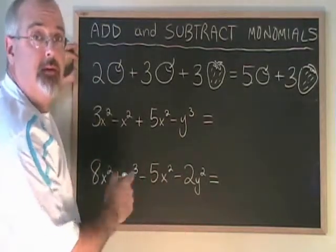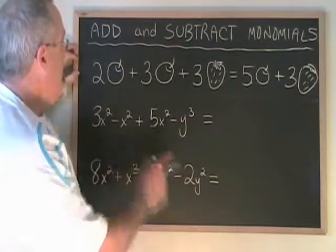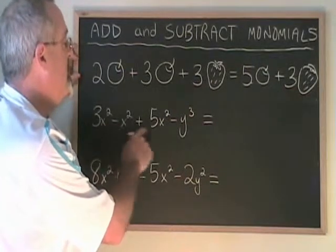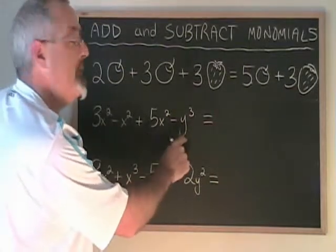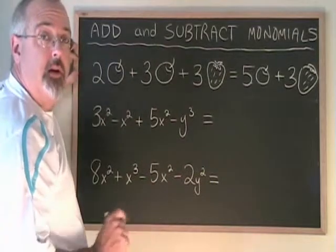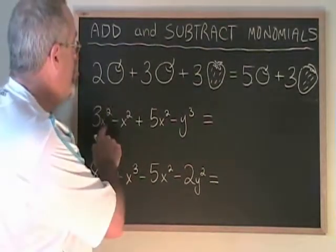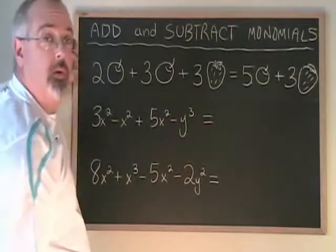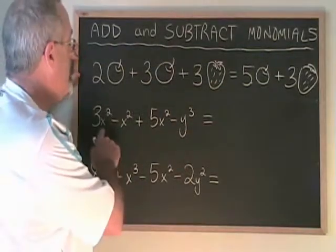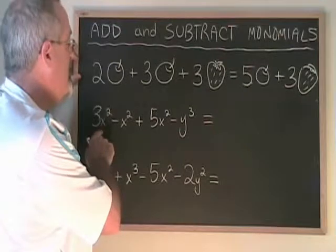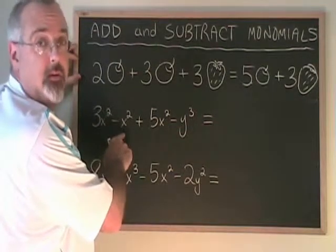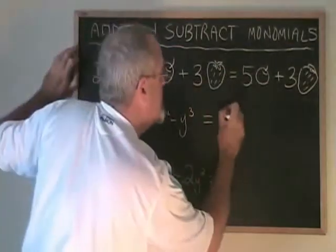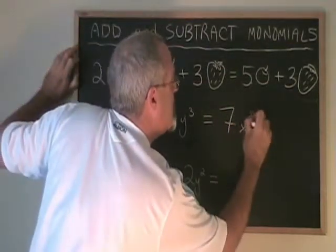In this example we have three x squared minus x squared plus five x squared minus y cubed. There are two types of term: three different terms that have x squared, and only one term with y cubed. Let's combine our x squared terms: three x squared minus x squared equals two x squared, plus another five x squared equals seven x squared.